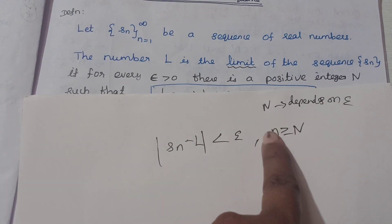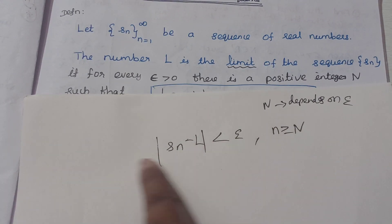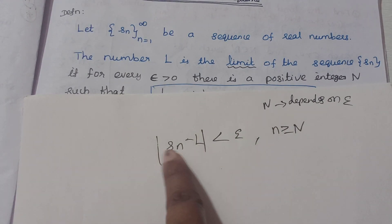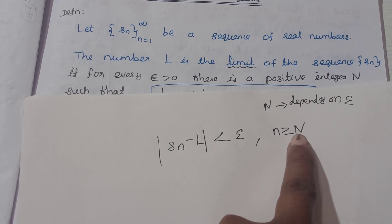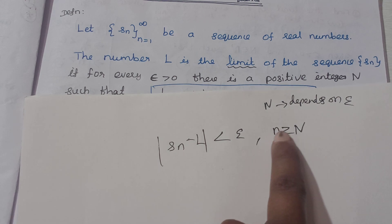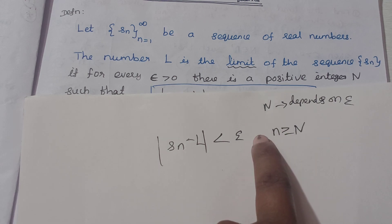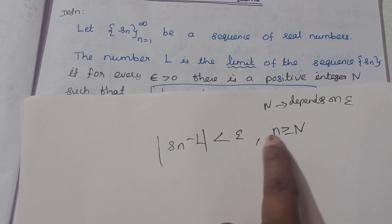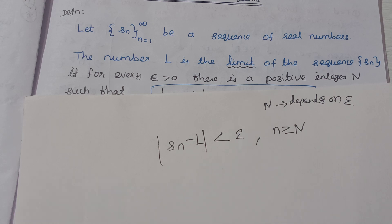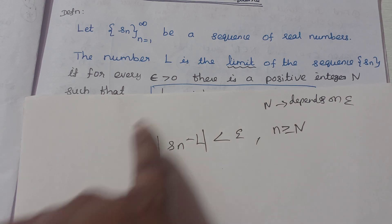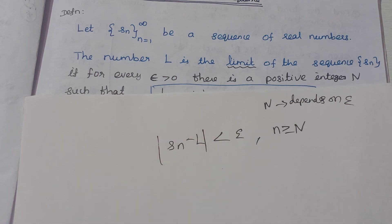At a certain stage, the values exist. The n is greater than or equal to capital N. So n equals 1, 2, 3, and so on. Up to n minus 1 — the final terms satisfy the inequality.